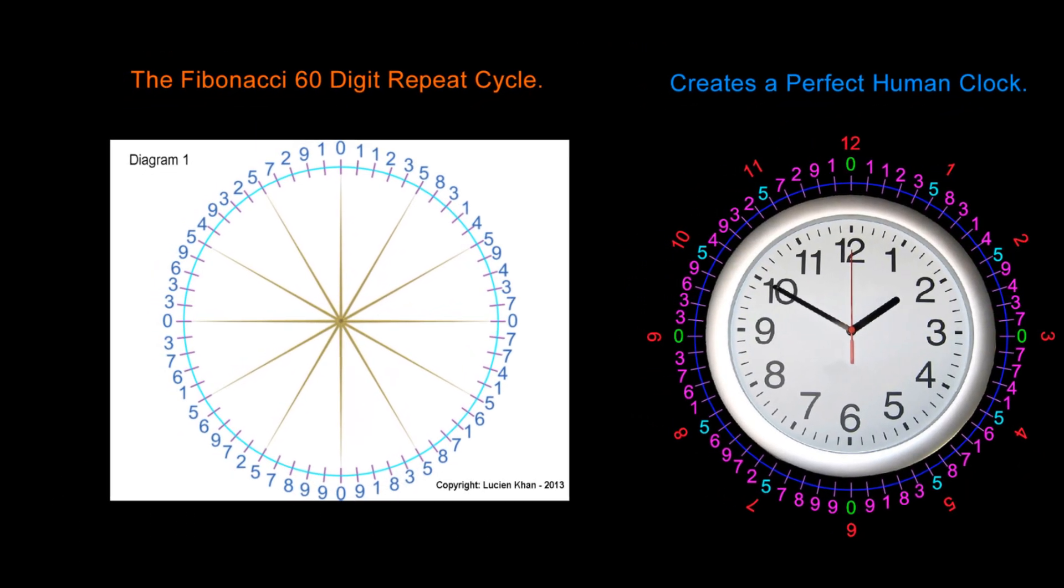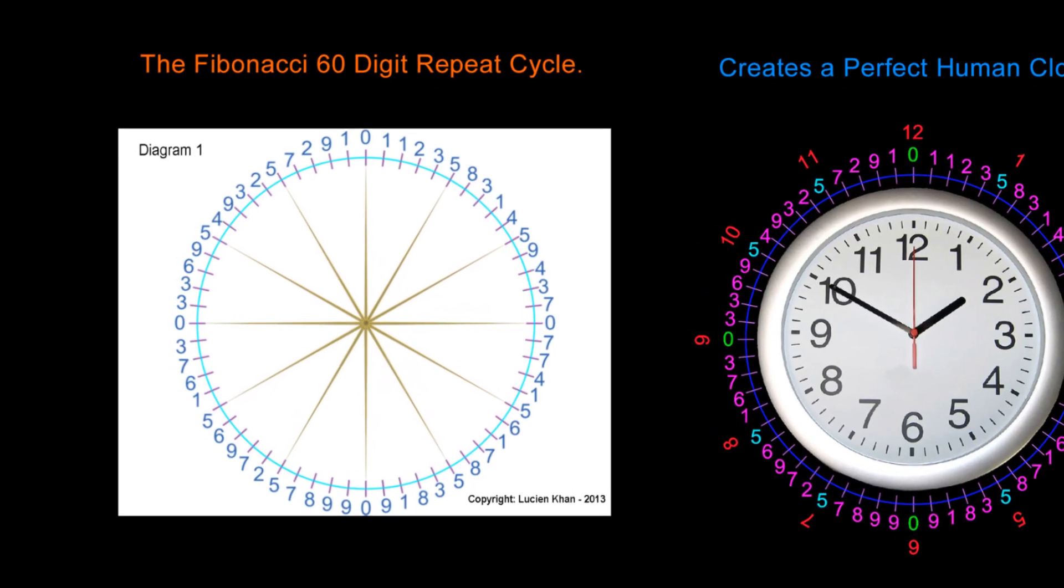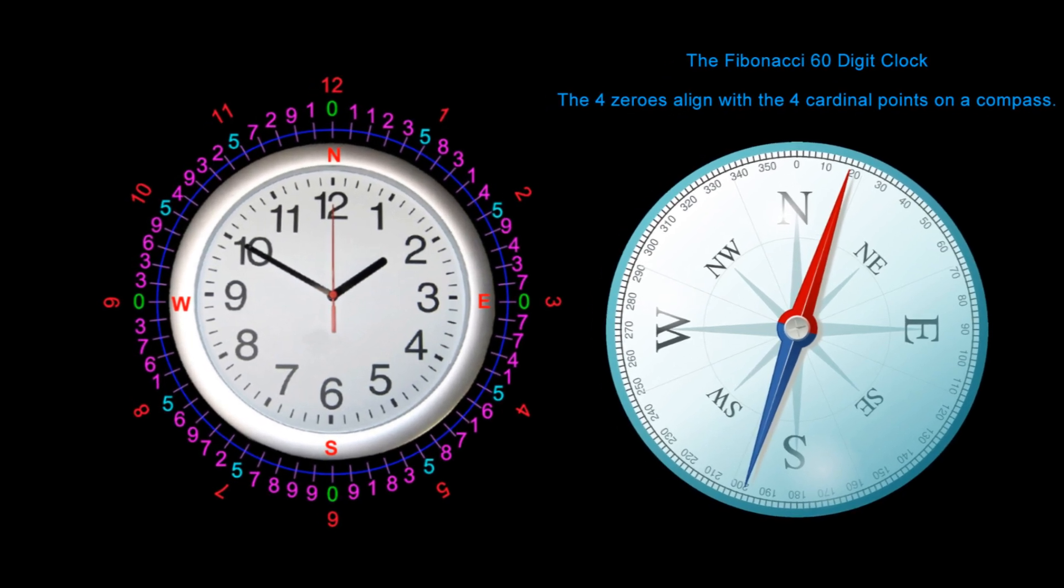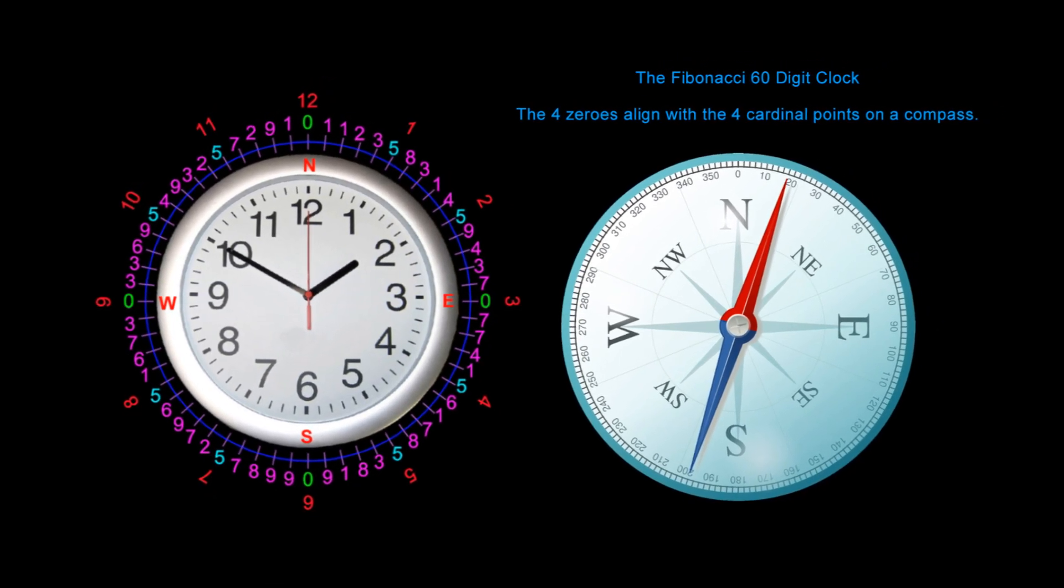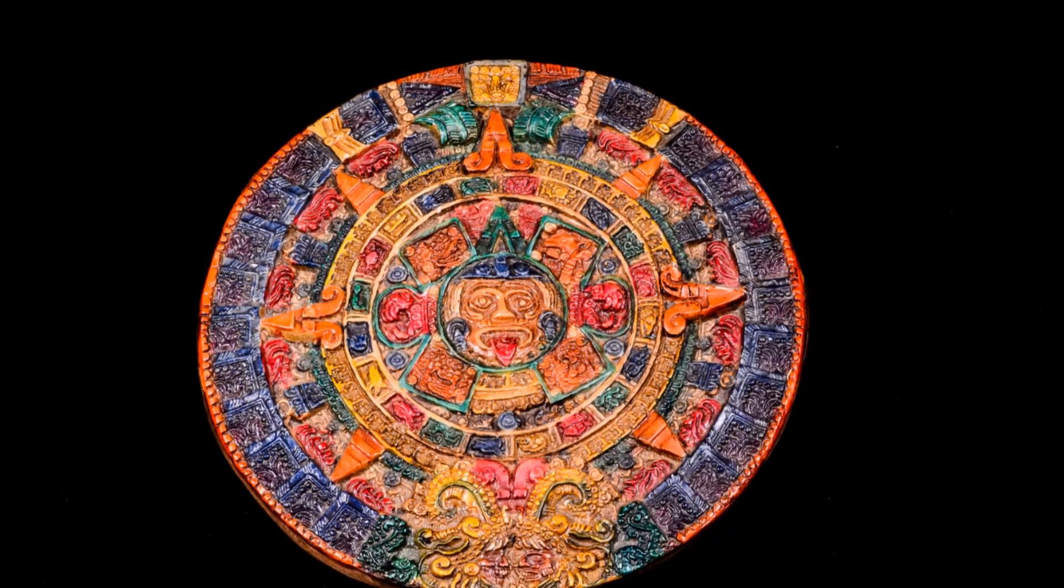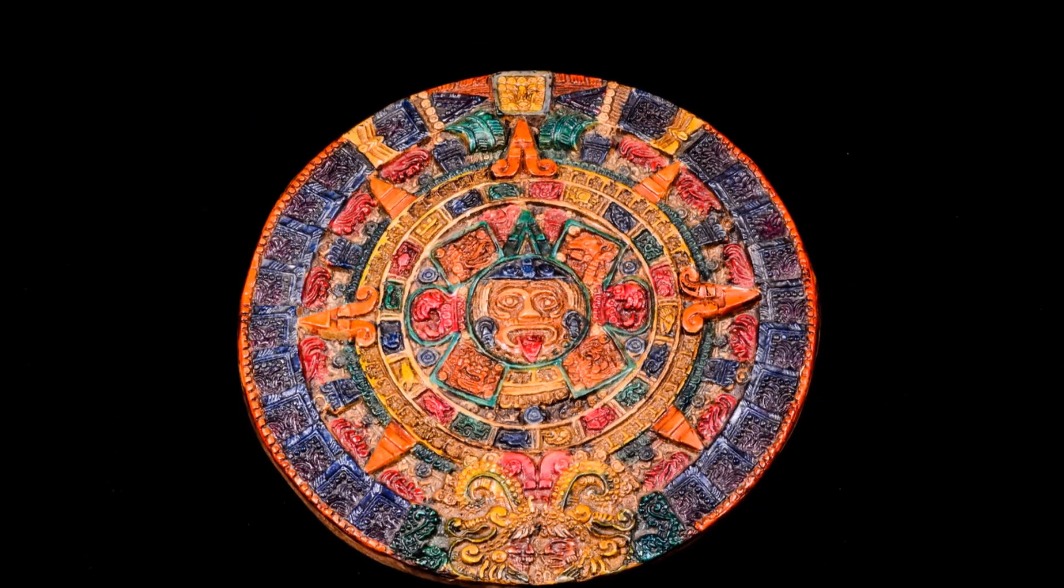Once again, why did our ancient ancestors settle on using 60 for our clocks and 360 degrees on our compasses? And how can the Fibonacci series be randomly generating all of these numbers? Why did the Mayans believe that the universe was created by smaller cycles of time moving within larger cycles of time? Clearly, none of this is random.